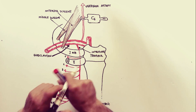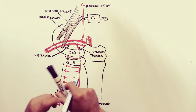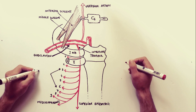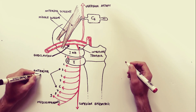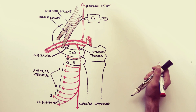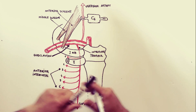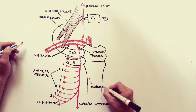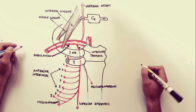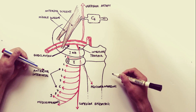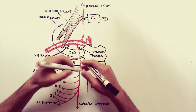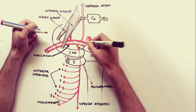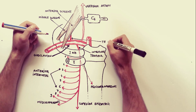For intercostal spaces 7, 8, and 9, the anterior intercostal branches arise from the musculophrenic artery. Another important branch of the internal thoracic artery is the pericardiophrenic artery, which runs downwards and accompanies the phrenic nerve. The internal thoracic artery also gives off mediastinal branches, thymic branches, sternal branches, and perforating branches such as the medial mammary branches.